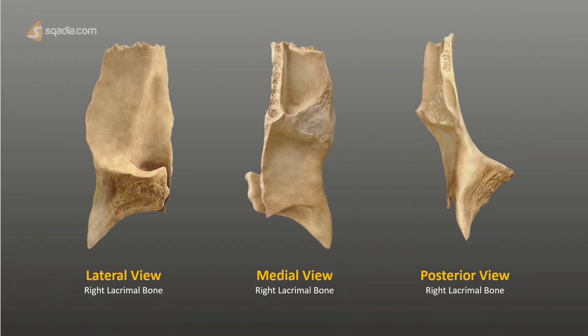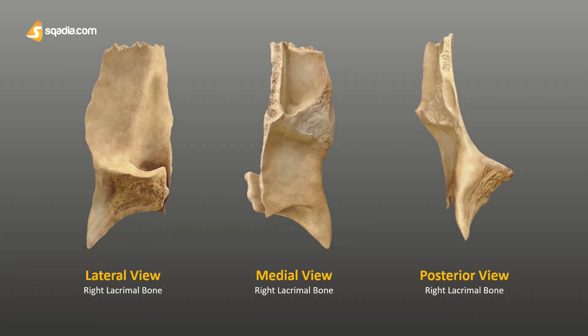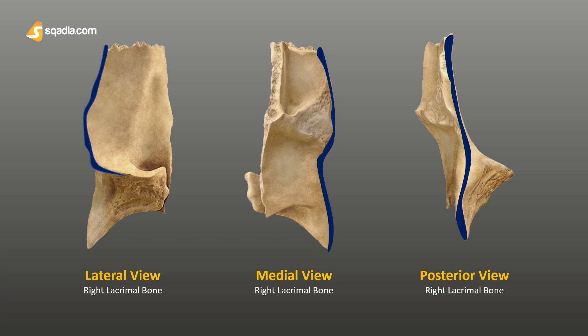If we take a look at the borders in the different views of the lacrimal bone, we can see that this portion makes up the anterior border, this portion makes up the posterior border, on the top we have the superior border, and on the bottom side we can appreciate the inferior border, represented in red.